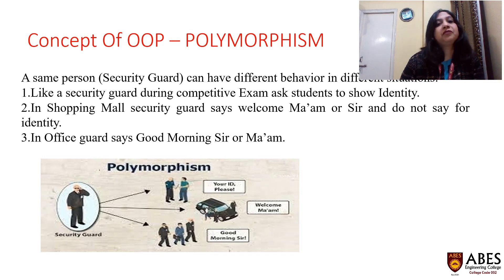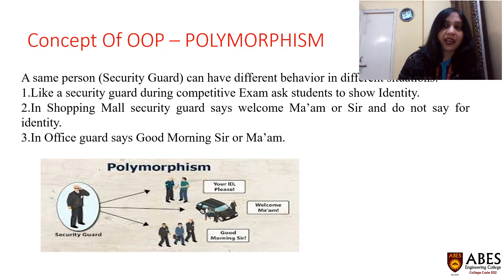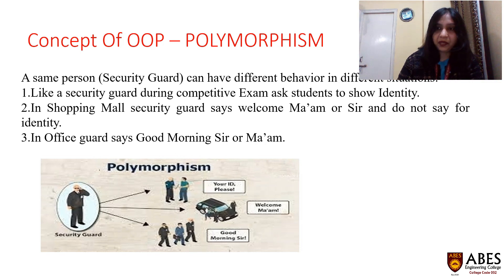The last concept of object-oriented programming is polymorphism. Poly means many and morphism means form — one thing in many forms. For example, a security guard can have different behavior in different situations: if you visit a mall, the security guard will salute you; if you go to give an examination, the guard will check your admit card and frisk you. He is the same security guard but performing different functionalities. In object-oriented programming, polymorphism is implemented by operator overloading, function overloading, and virtual functions.